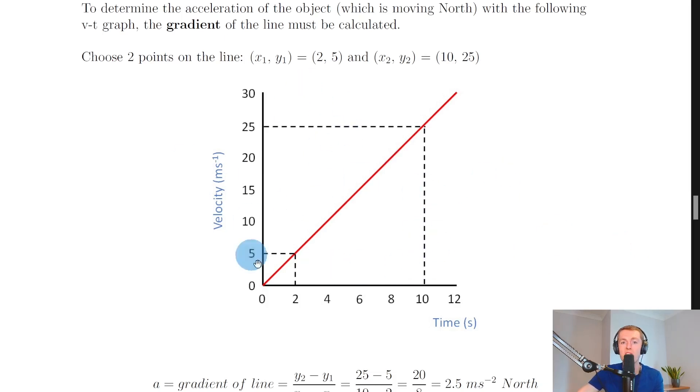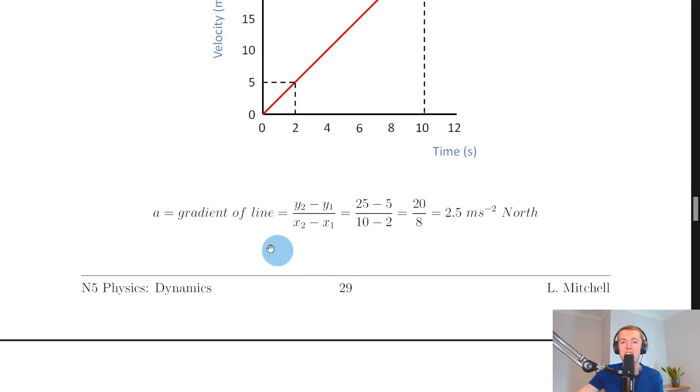To choose two points on the line here, we could say that x1, y1 was the point (2, 5) and we could say the point x2, y2 was (10, 25). Remember, we're saying that acceleration is equal to that gradient. So a is equal to the gradient of the line, which equals the change in y over the change in x, which is equal to 25 minus 5 divided by 10 minus 2.